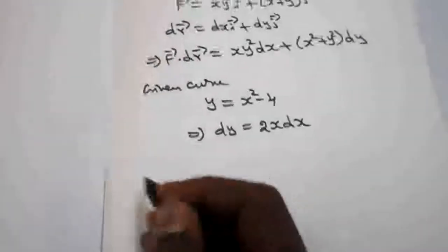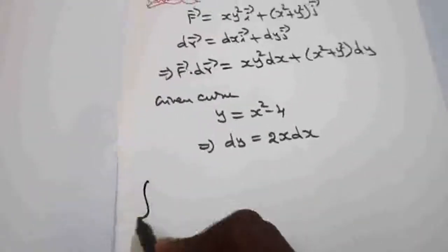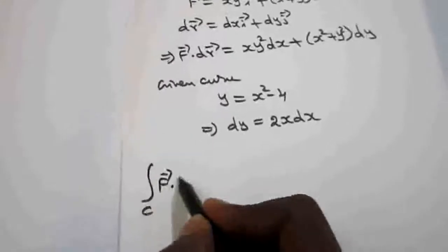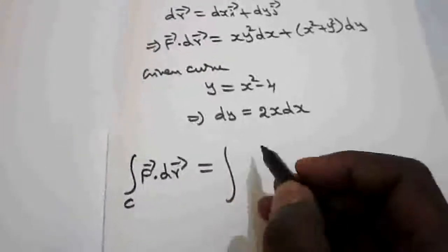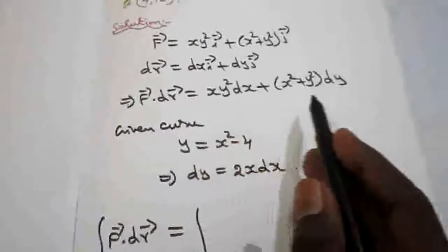Now I am going to take the given integral. Integral over c, f dot dr is equal to integral over c of xy²dx + (x² + y²)dy.